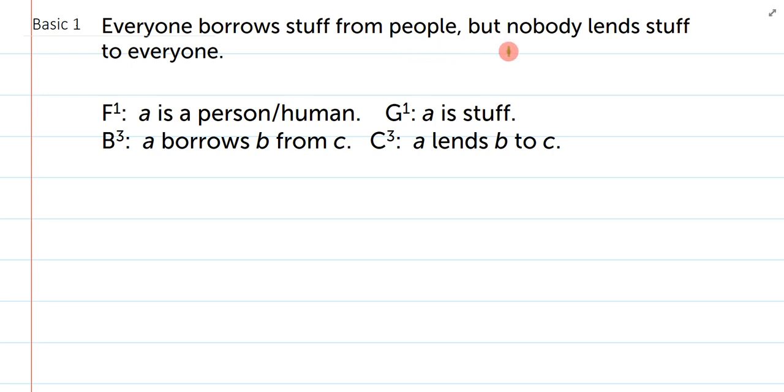Everyone borrows stuff from people, but nobody lends stuff to everyone. Right off, I should see that 'but' is an important main connective here. And when I realize there's a 'but,' which is an 'and,' I have to ask whether my left conjunct and right conjunct are talking about the exact same literal things. While I'm using similar words, it's actually not talking about the exact same thing. There's no reference words or pronouns. So essentially, I can symbolize one half separately from the other, which is exactly what I'm going to do.